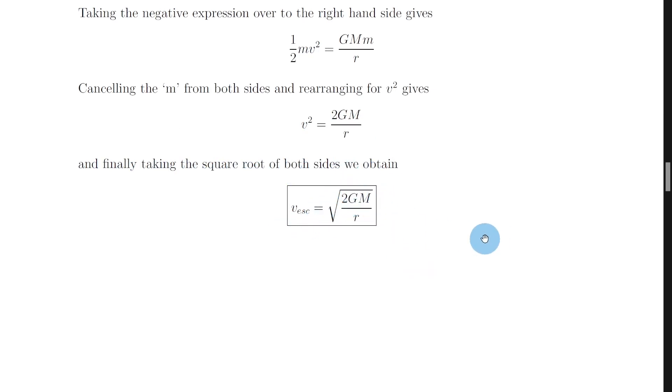Where G, remember, is your universal constant of gravitation from the datasheet, capital M is the mass of the planet, and little r is the radius of the planet.